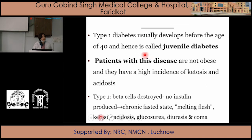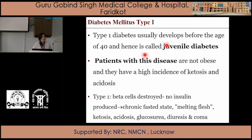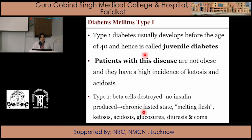Type 1 diabetes mellitus usually develops before the age of 40, so it is called juvenile diabetes. Patients with this disease are not obese, and they have a high incidence of ketosis as well as acidosis. Because beta cells are destroyed and no insulin is produced, it is just like a state of chronic fasting or melting flesh. This results in ketosis, acidosis, glycosuria, diuresis, and coma.